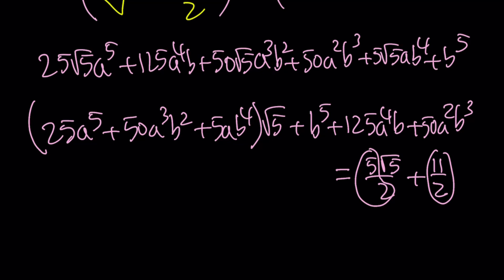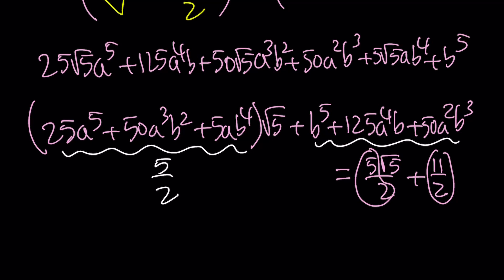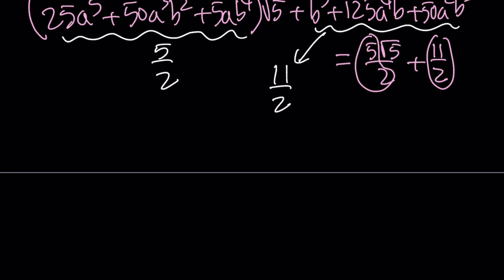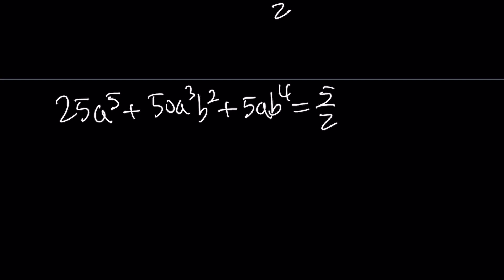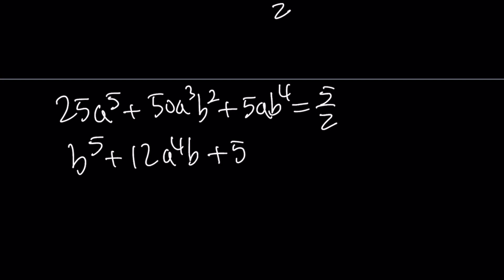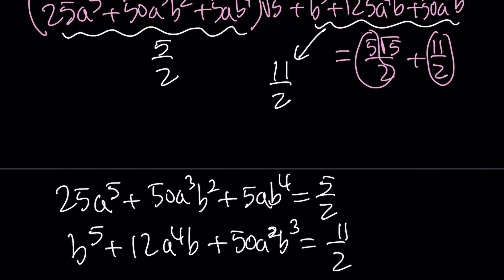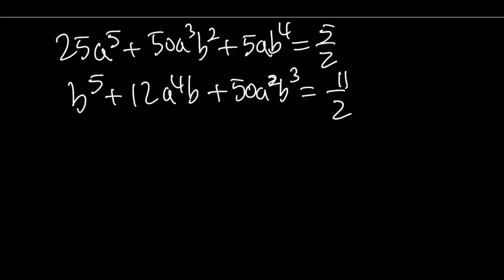Since the expressions are equal and the coefficients of the irrational and rational parts must match separately, the coefficient of √5 on the right must equal 5/2, and the rational part must equal 11/2. This gives us a system, which is quintic. But it's a special type of system: it is homogeneous, meaning the sum of the powers of a and b in each term is always 5.